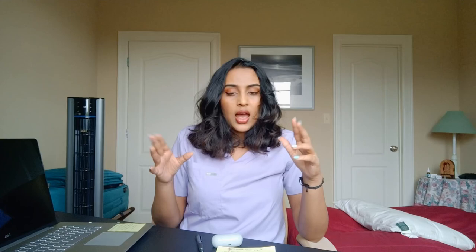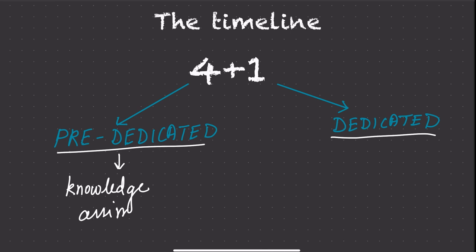The total prep time I would advise for somebody preparing for Step 2 is five months total — four months of pre-dedicated and one month of dedicated. In the pre-dedicated you'll be doing mainly knowledge assimilation, which is collecting all the knowledge you need for your Step 2 exam. In your dedicated, you'll be doing knowledge memory — committing everything you've learned into memory. We can call this the memorization and revision phase.